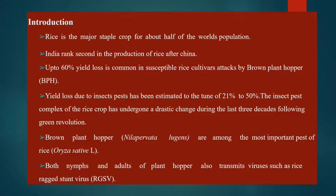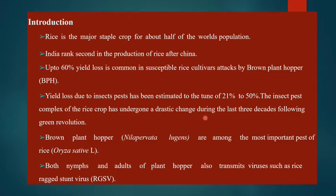Rice is the major staple crop for half of the world's population and it ranks second in production after China. Up to 60% yield loss is common in susceptible rice cultivars attacked by the brown plant hopper, and yield loss due to insect pests has been estimated at 25% to 50%. The insect pest complex of rice has undergone a drastic change during the last three decades following the green revolution.